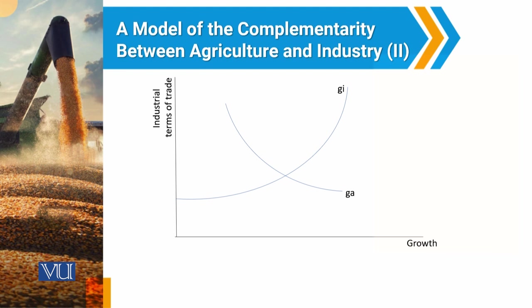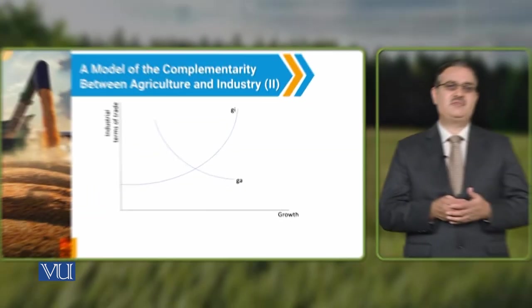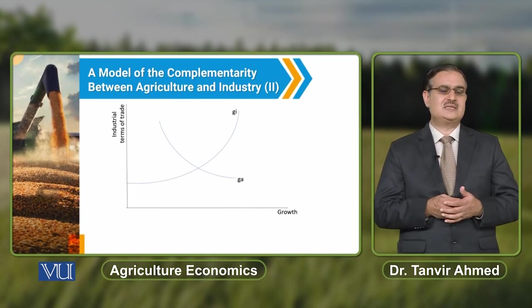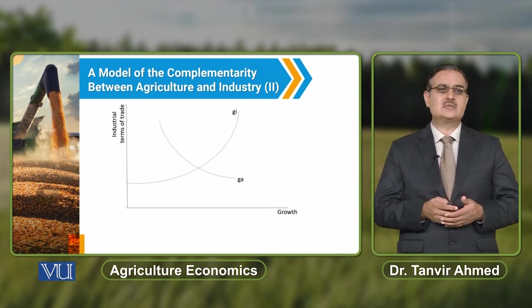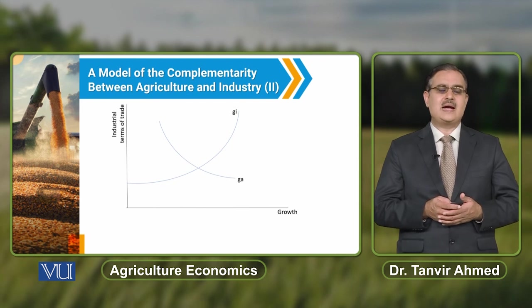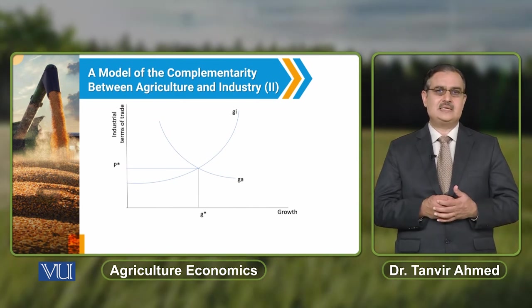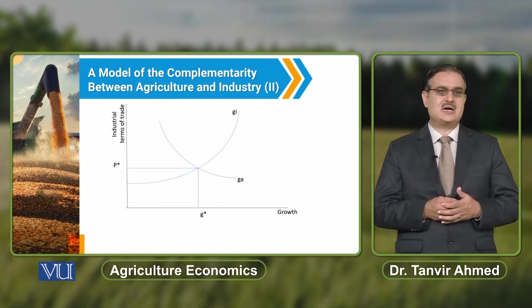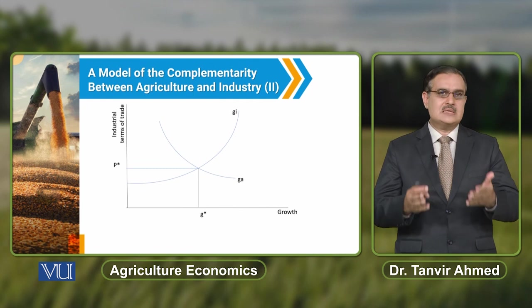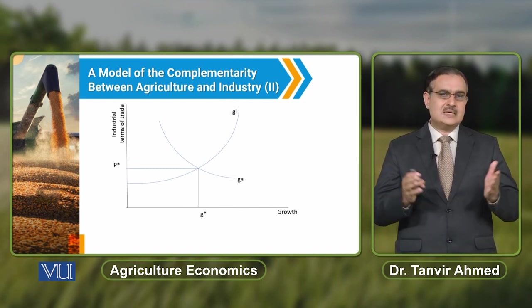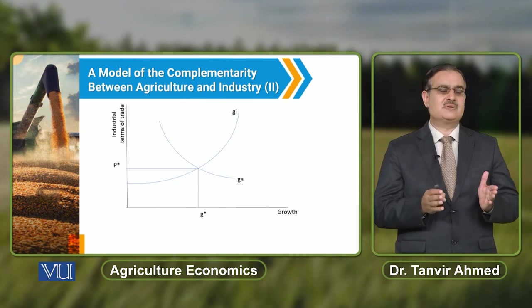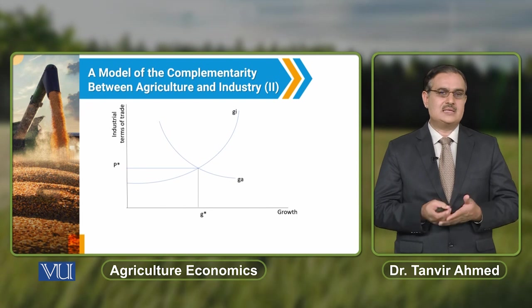To understand this with the diagram, the horizontal axis represents growth and the vertical axis represents the industrial terms of trade. The agricultural growth curve is a negatively sloped line, while the industrial growth curve is positively sloped. The equilibrium terms of trade, P*, and balanced growth, G*, are observed at the point where the two curves intersect, where industrial growth equals agricultural growth.